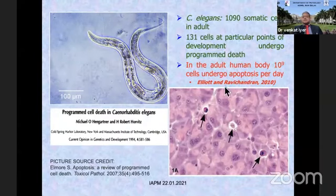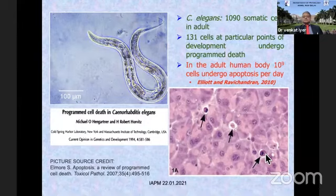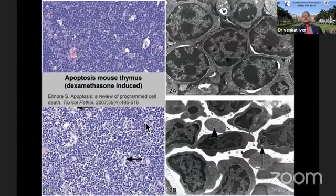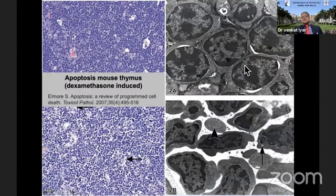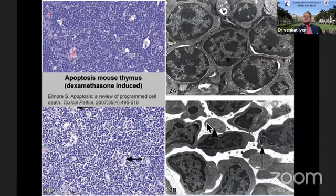We all know how to recognize apoptosis because we are all pathologists. They are the small shrunken bodies with pyknotic nuclei. If you give dexamethasone to a mouse, the thymus — this is a normal thymus — and after dexamethasone it has all become apoptotic. These are the histiocytes eating this. The electron microscope shows the normal lymphocyte and the condensed nuclei and the cytoplasmic blebs with condensation.